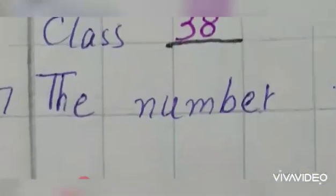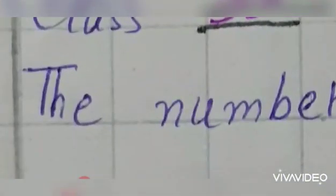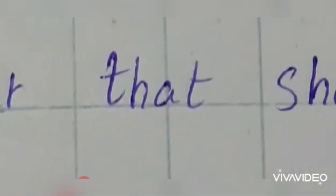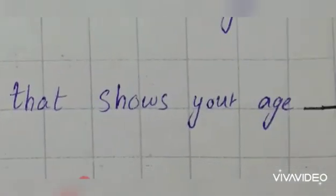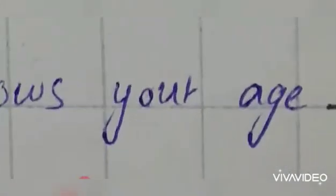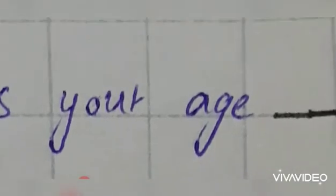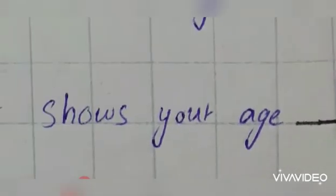Number 7: The number that shows your age. Aapki age kya hai? Is blank mein aapki apni age likhni hai.